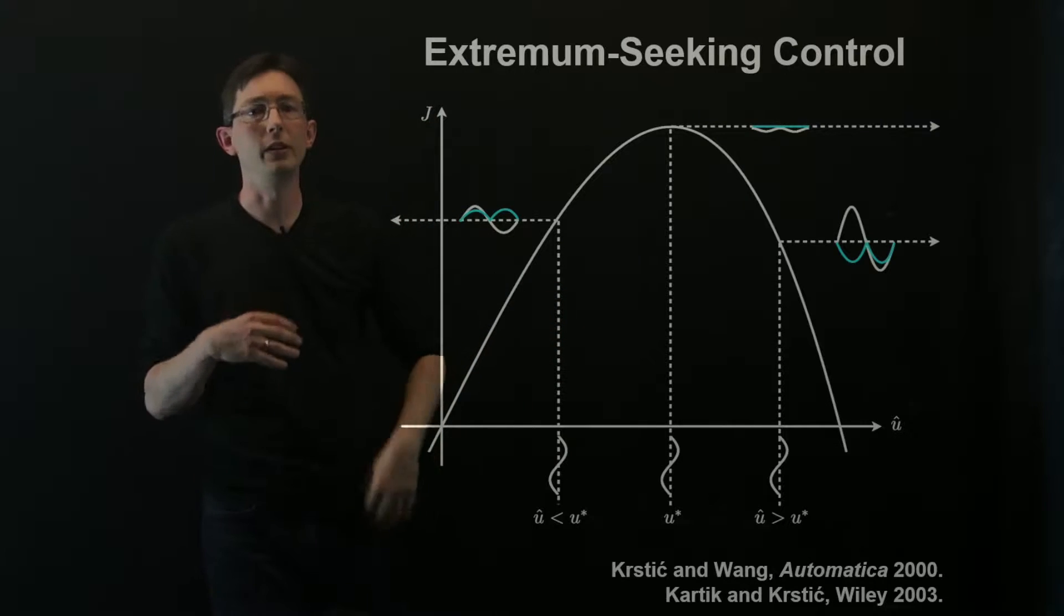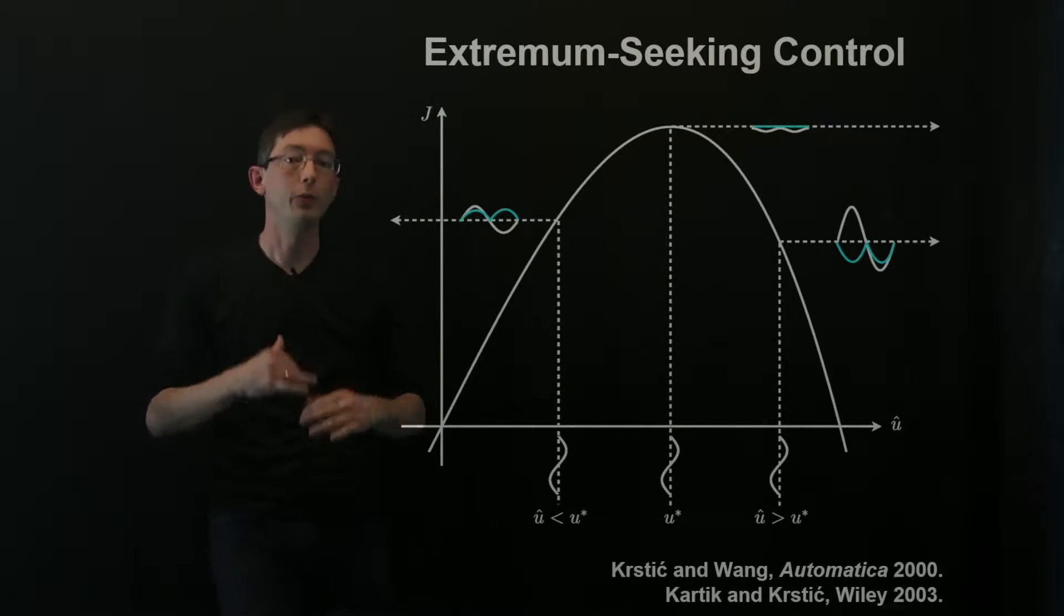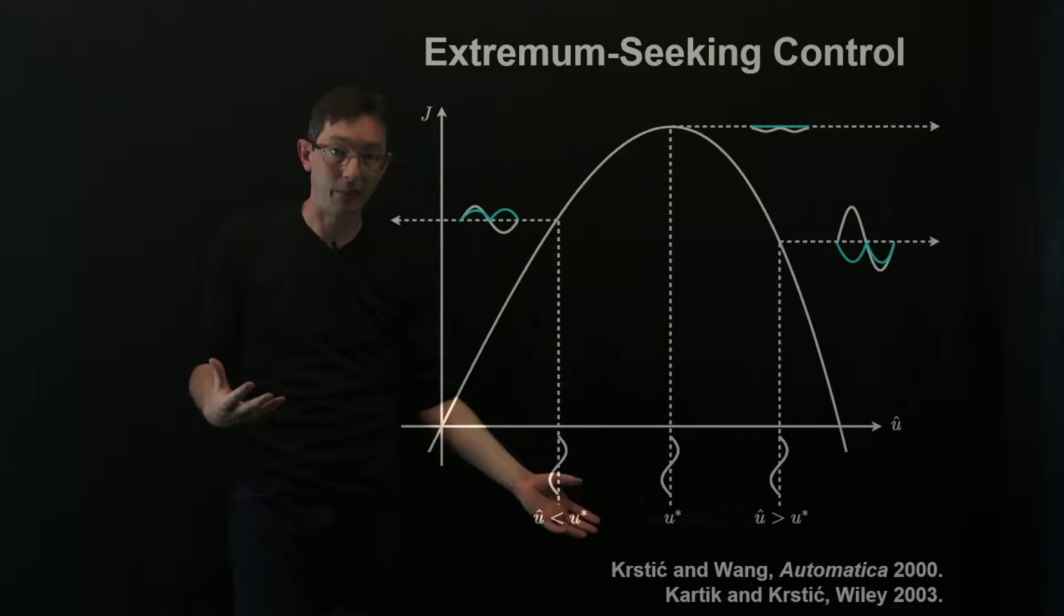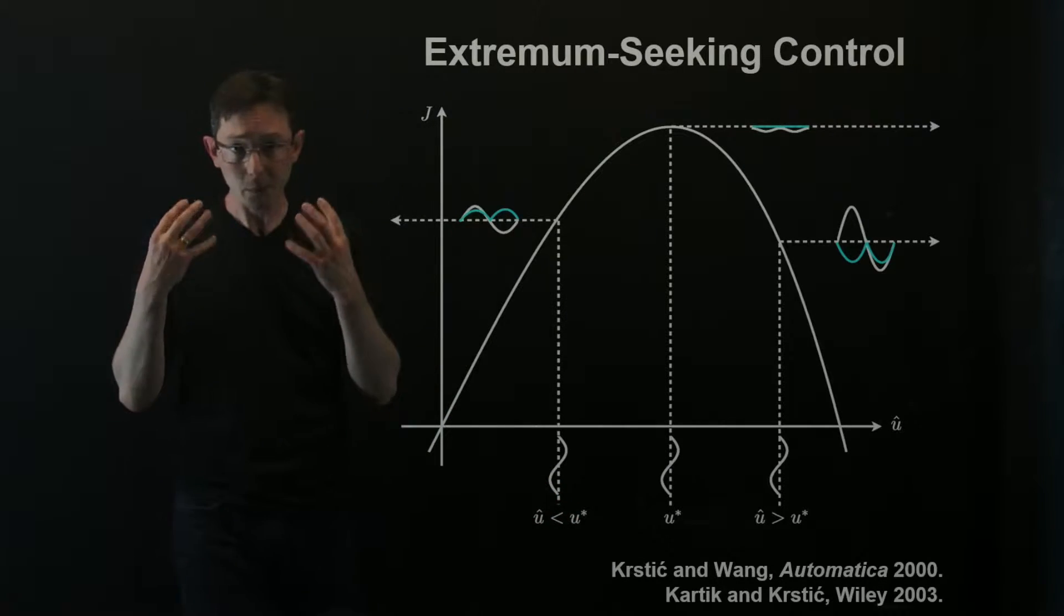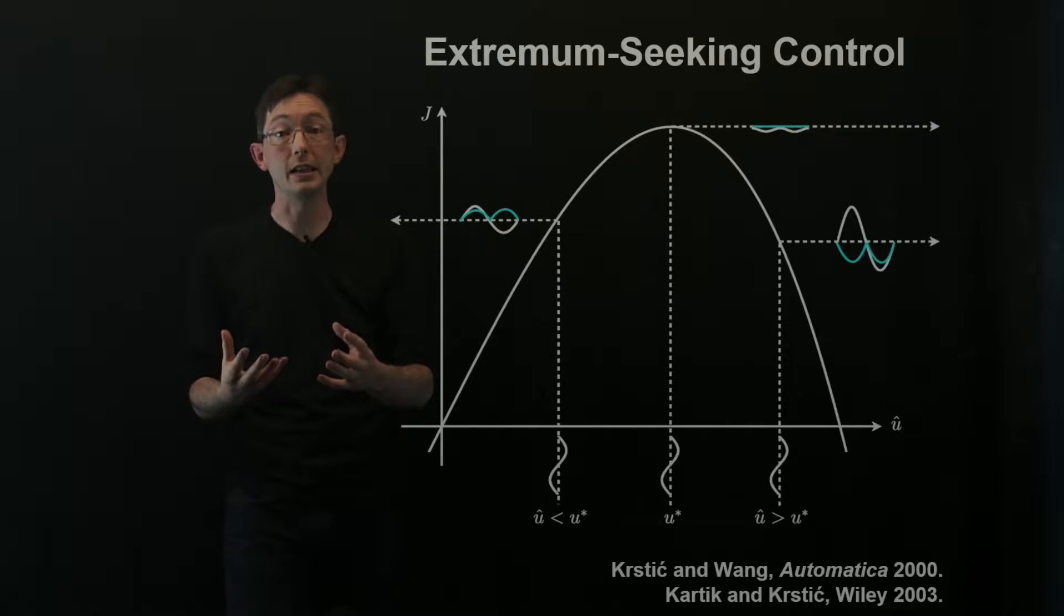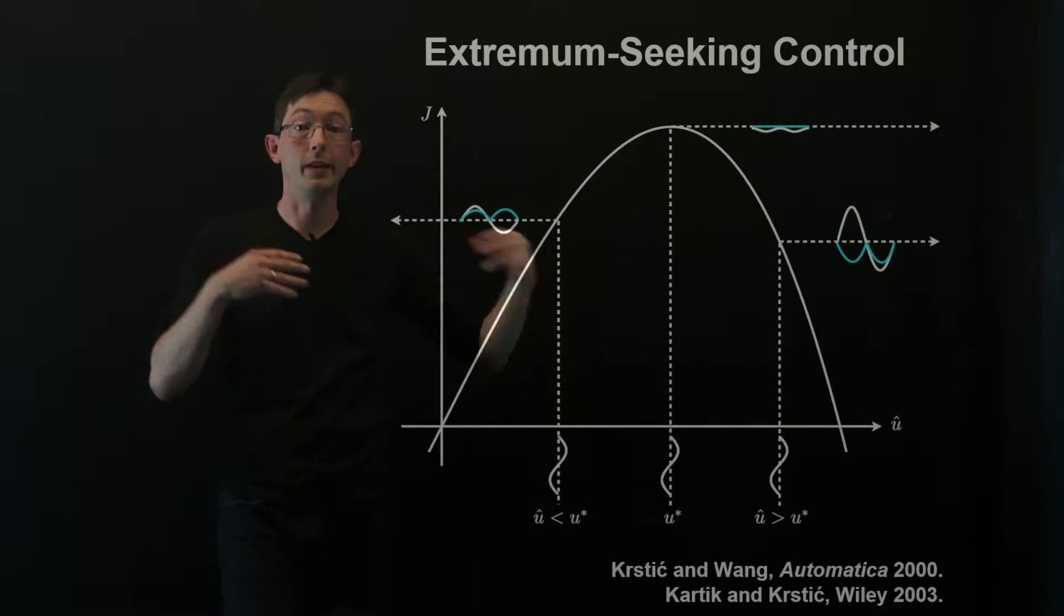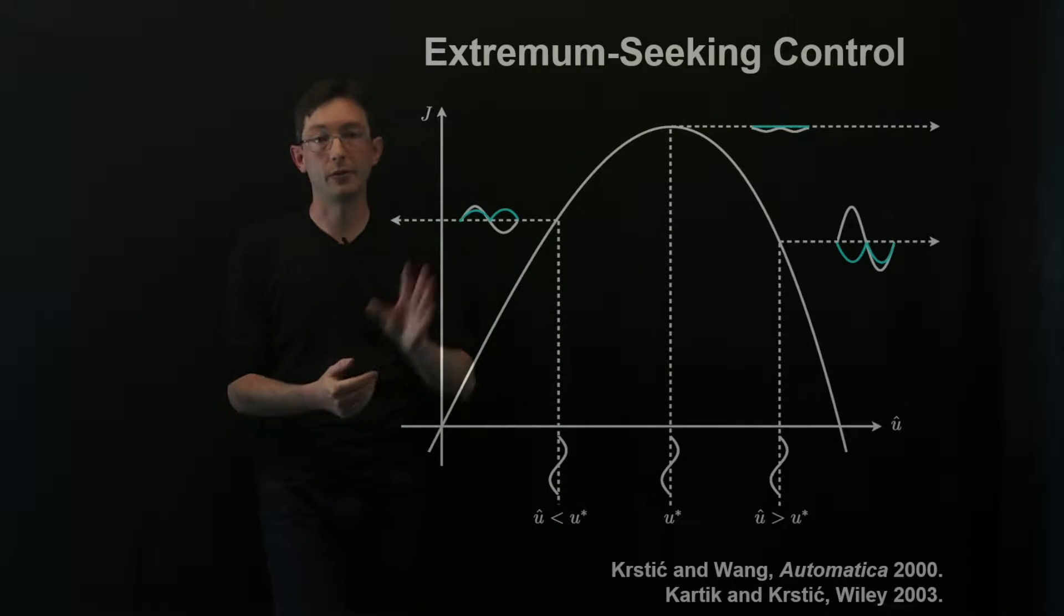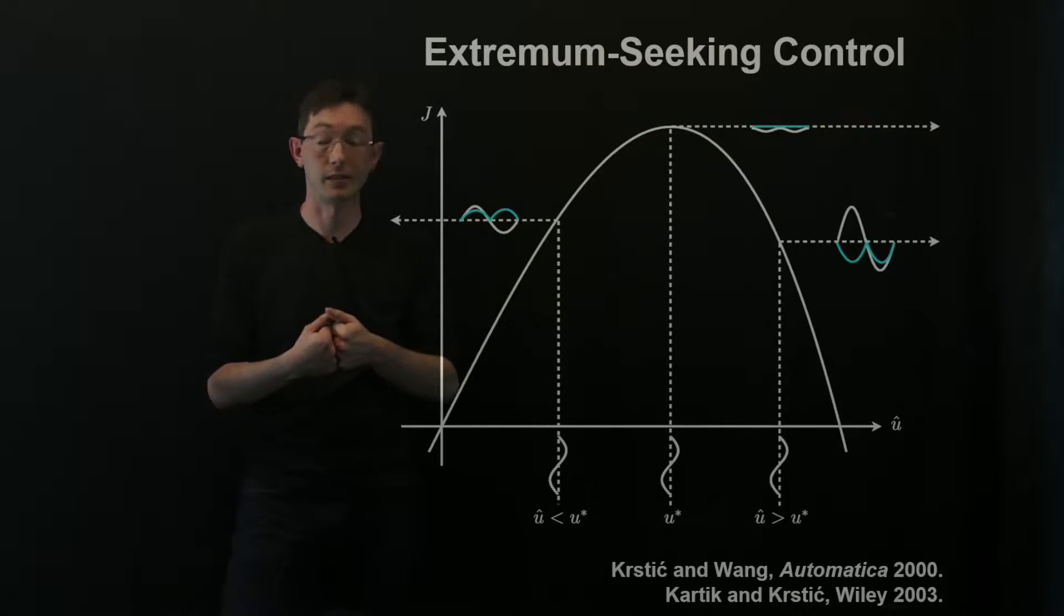Extremum-seeking control is really that simple, but there is a lot of depth when you apply this to dynamical systems. So Miroslav Krstic and collaborators at UCSD have developed lots of guarantees for when extremum-seeking control will and will not work when it's applied to dynamical systems.